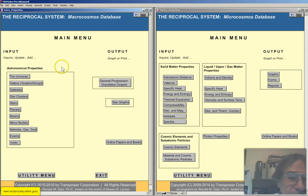In addition to that, we have these two database modules. I've already explained what we have here in the Macrocosmos database. The microcosmos database module has all the properties of matter in the microcosmos. So for solid state matter, this module has calculations for the atomic distance, valence, specific heat, energy and entropy, thermal expansion and compressibility, electrical magnetic properties, isotopes, and spectra.